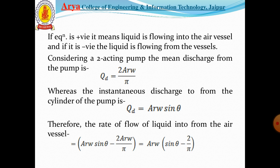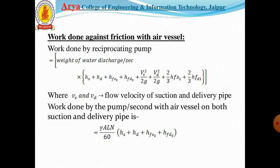For a double acting pump, qd = 2·r·ω·sin(θ). Therefore, the rate of flow of liquid into or from the air vessel equals A·r·ω·sin(θ) minus 2A·r·ω/π, which simplifies to A·r·ω·(sin(θ) − 2/π).